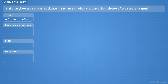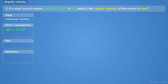If a vinyl record rotates clockwise 1350 degrees in 5 seconds, what is the angular velocity of the record in RPM? We're given an angular displacement of 1350 degrees, which would be negative because it's clockwise. Next we're given a period of time — 5 seconds — and the problem asks us to find the angular velocity, omega, specifically in revolutions per minute.